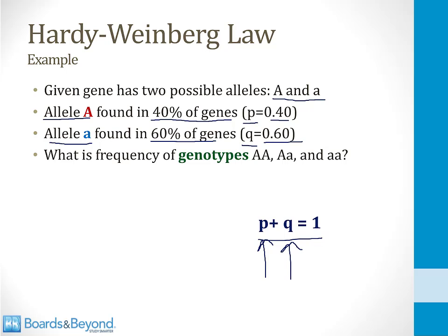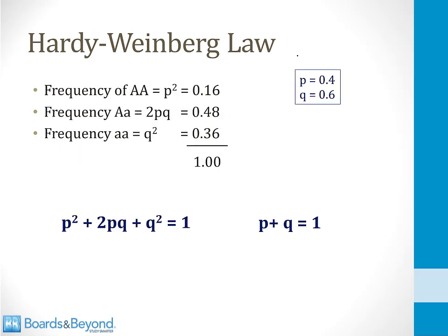So what we're going to use the Hardy-Weinberg law to do now is to determine the frequency of the different combinations of genes — the different genotypes. All of us have two copies of gene A in the cells of our body, so what is the frequency of two capital A's being found together, two lowercase a's being found together, or a mixture of the two alleles? The Hardy-Weinberg law says that the frequency of two capital A's being found together is p squared — that would be 0.4 times 0.4, which is 0.16, or 16%.